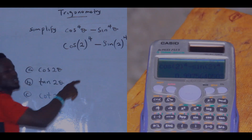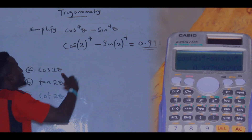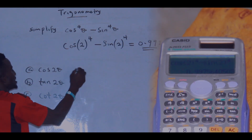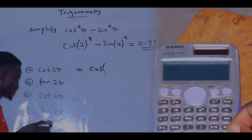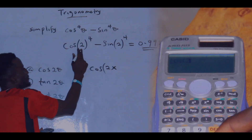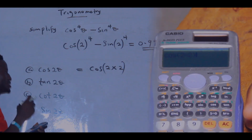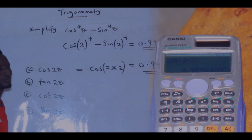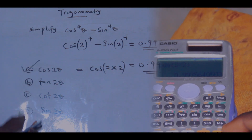Now insert the same value we used in the question into each option. The option that gives the same answer, 0.998, is the correct answer. Let's go with option A: option A says cos(2θ). Don't forget theta is two, so press cos, then press two multiplied by two, close the bracket, press equals. You observe that this is also approximately 0.998 — which is the correct answer.